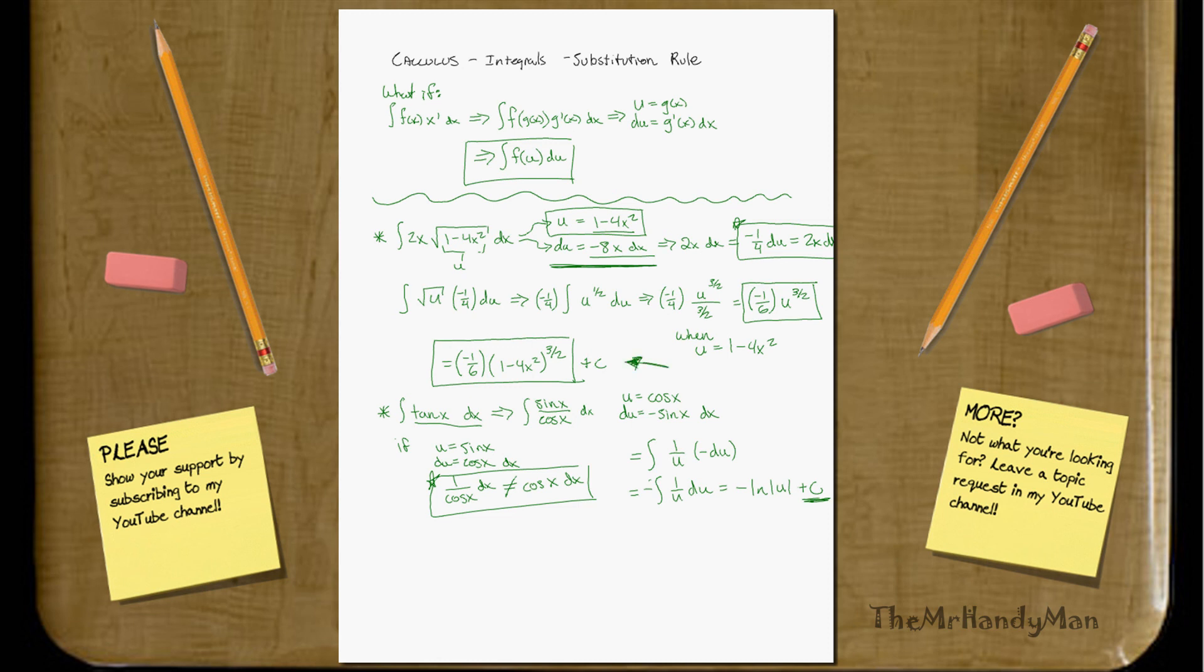Don't forget your constants. Ever, ever, ever. Okay, so back to this one. You have negative natural log u plus c. So, negative ln of what our u is. Our u is cosine, so it's actually negative ln of cosine x plus c. And that's our solution.